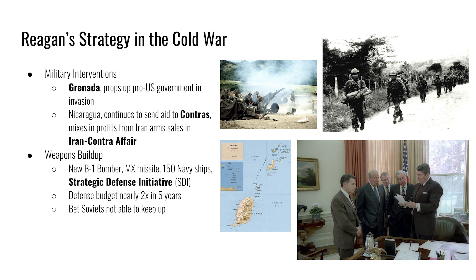Military interventions following a containment-style policy continued during the Reagan presidency. The island of Grenada in the Caribbean experienced political turmoil, and a military regime was briefly instituted after the assassination of the prime minister. The new regime was more closely aligned with communism and was receiving weapons and aid from the Soviet Union. The United States invaded the island in 1983, overthrew the military dictator, and installed a pro-US leader. The invasion was successful and completed in four days, which emboldened Reagan to continue that type of containment policy in Nicaragua.